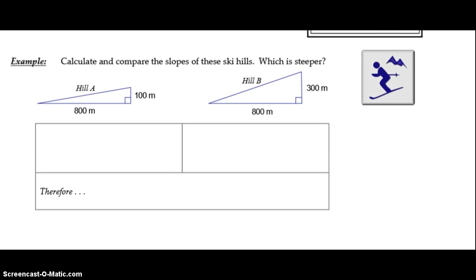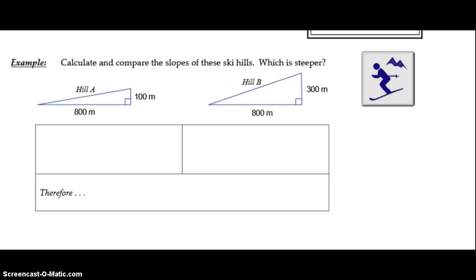For the first example we're given two different hills and we want to calculate which one is steeper. To do this we're going to use our slope formula rise over run. Rise represents the vertical portion which in this case is 100 and the run is 800. Slope should always be written as a fraction in lowest terms so the slope of that first hill is 1/8.